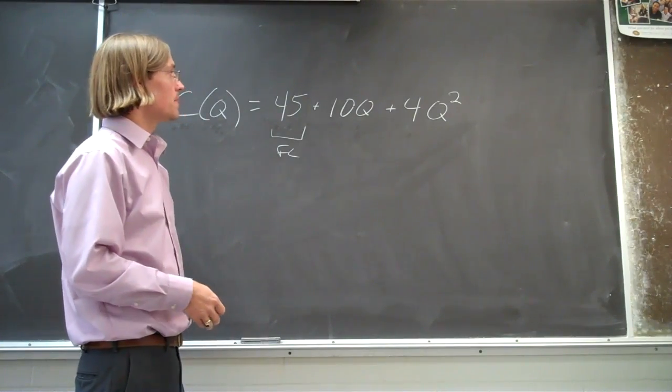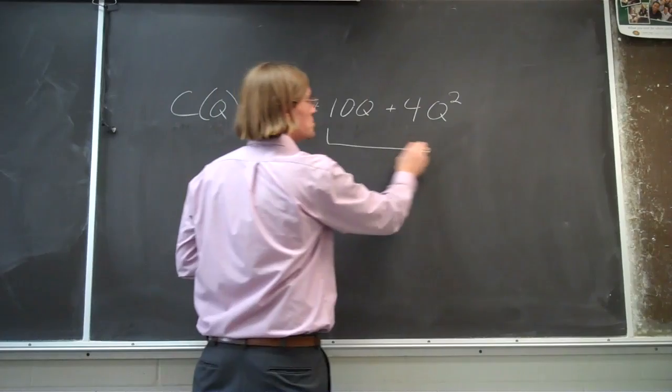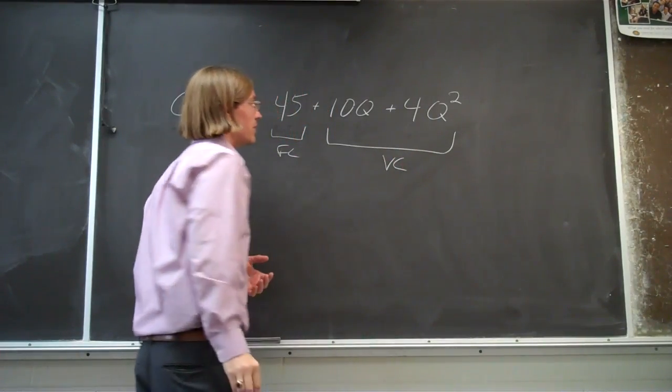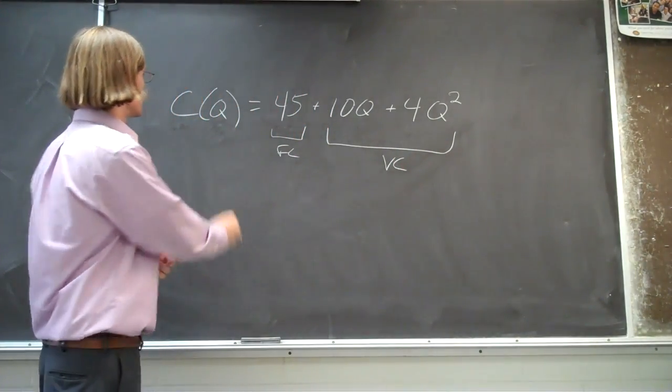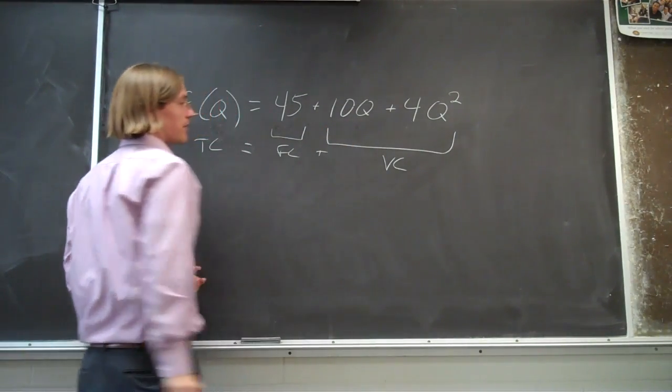That's the fixed cost. The part of the function that varies with output here, that's the variable cost. So your total cost equals your fixed cost plus your variable cost.